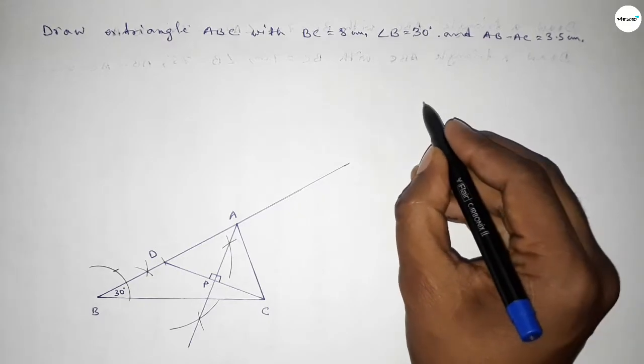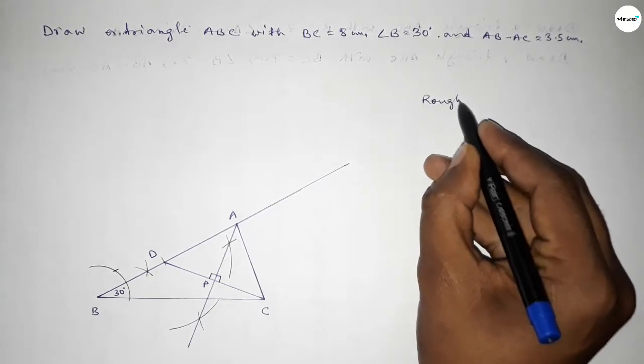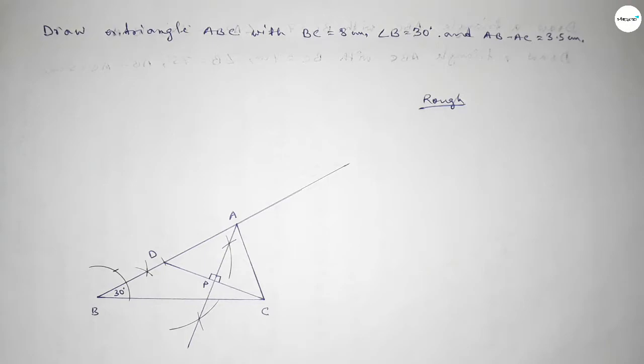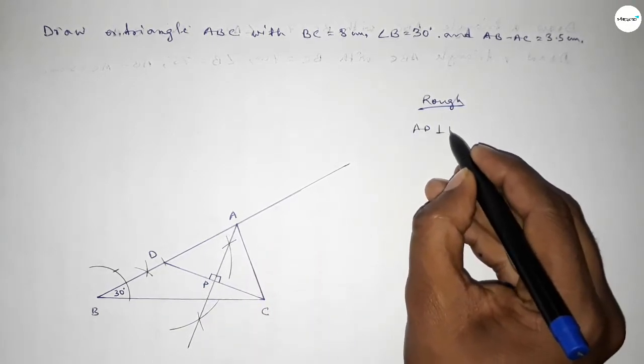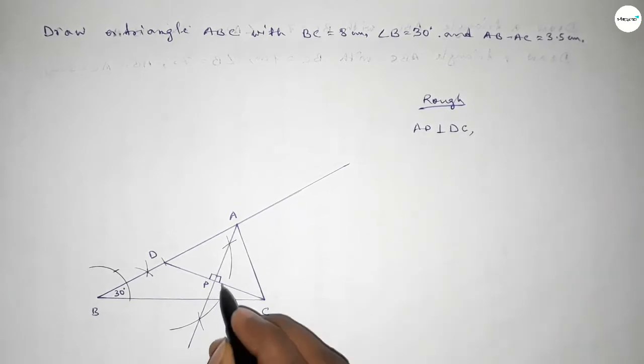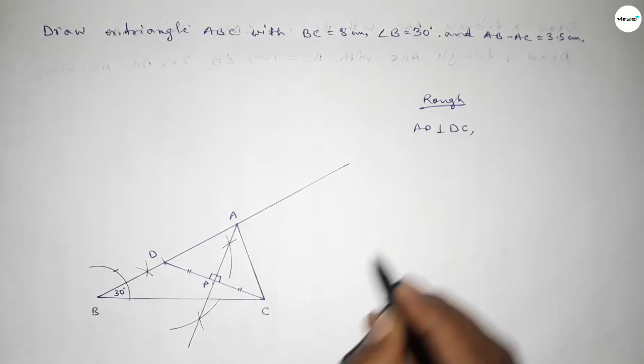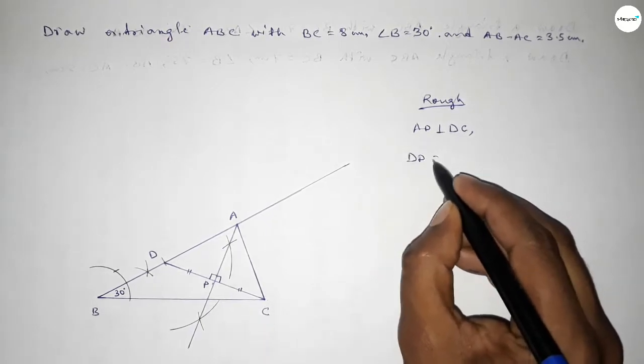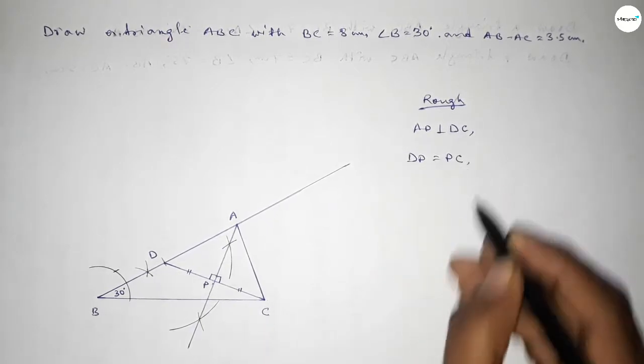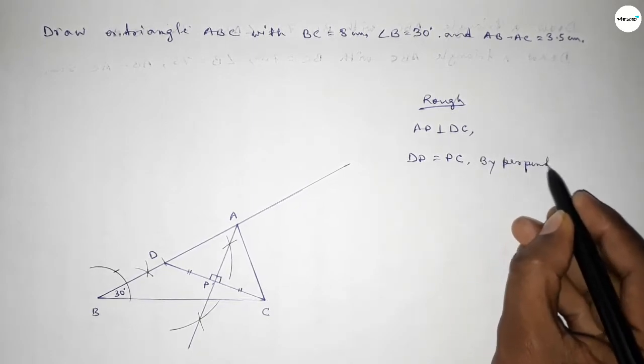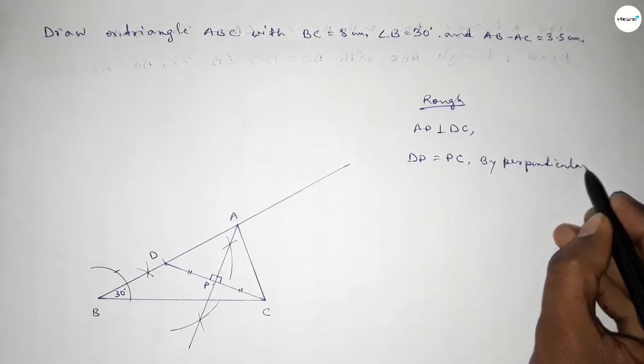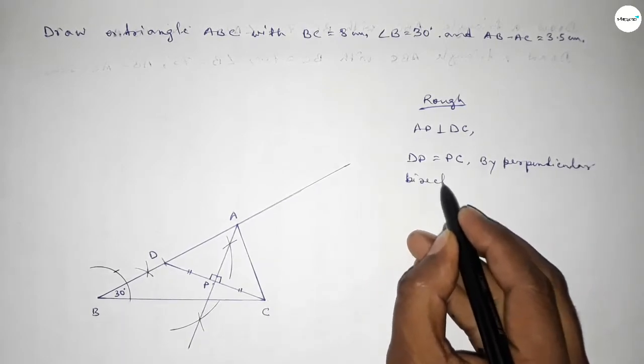Now roughly discussing some calculation here. AP is perpendicular to DC. Since AP is a perpendicular, so it bisects equally. So DP equal to PC, the length of DP equal to PC.